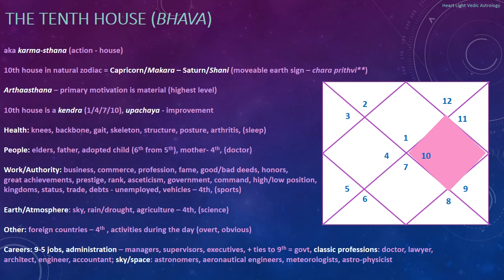The 10th house is a Kendra. The Kendras are the four core houses: first, fourth, seventh, and tenth. These are the core energies of a person. The 10th house is also an Upachaya, meaning improvement is seen over time. Since the 10th house is the Karmastana of action — daily action, socially overt and obvious — this is one of the main ways you shift your karma, especially if you're working above board and in upright ways. Since most people spend most of their time working, how they go about that work is very important for their overall well-being and karma development.